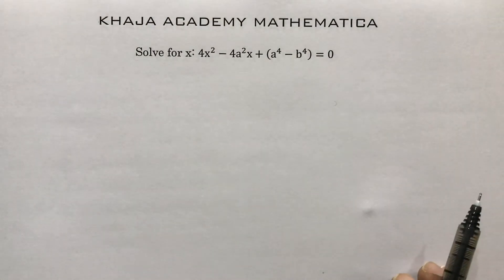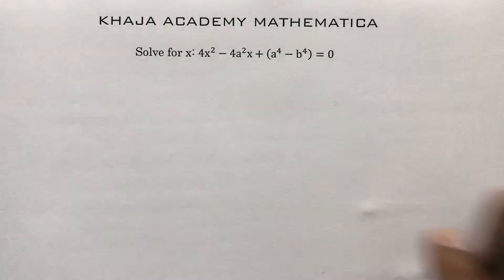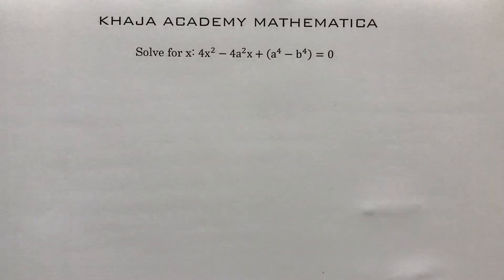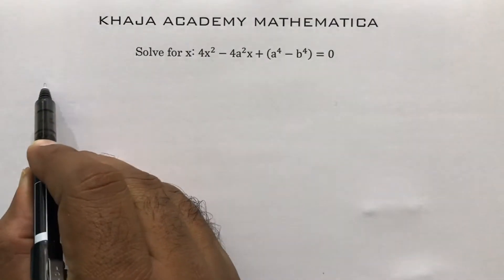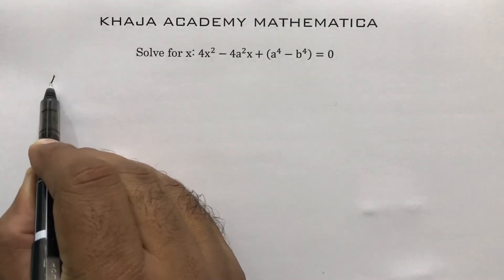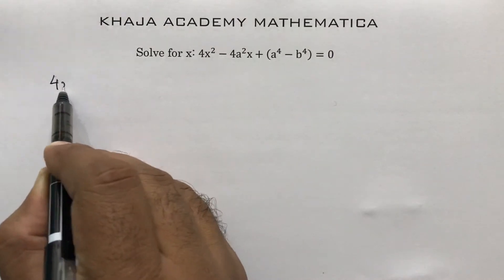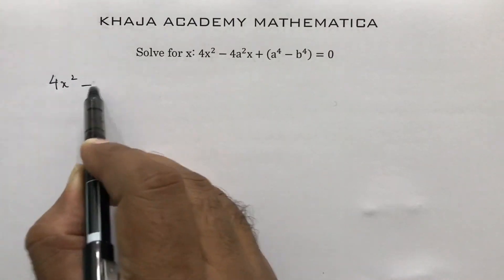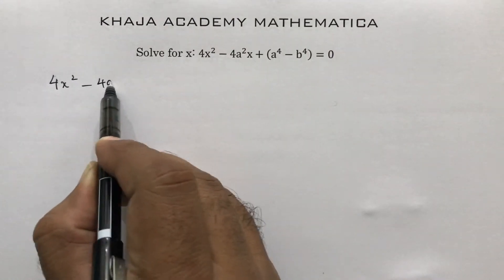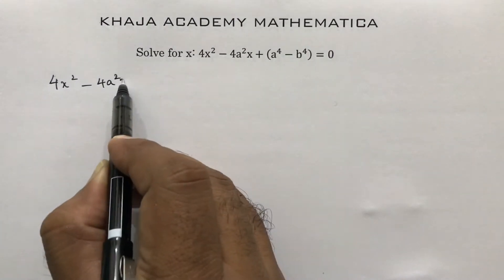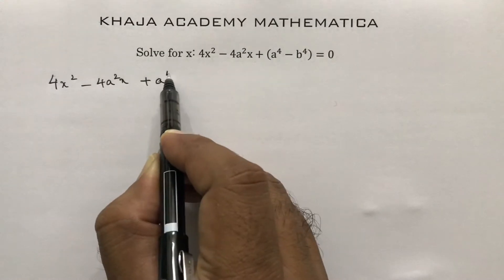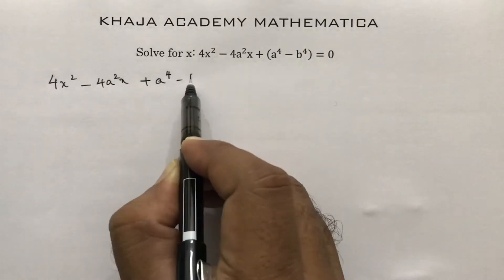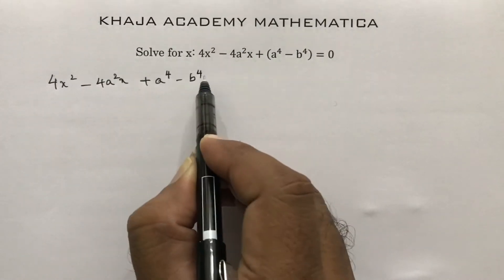Solve for x. This is an important problem from Class 10 quadratic equations. The equation is 4x² - 4a²x + a⁴ - b⁴ = 0.